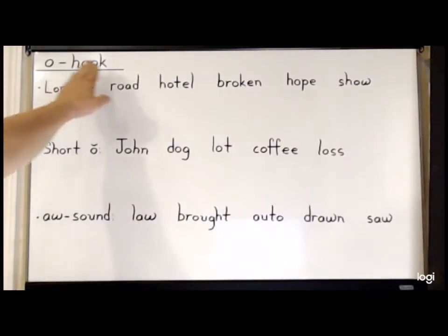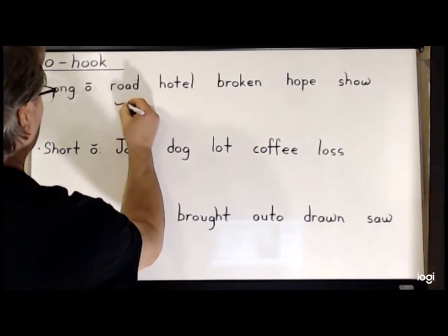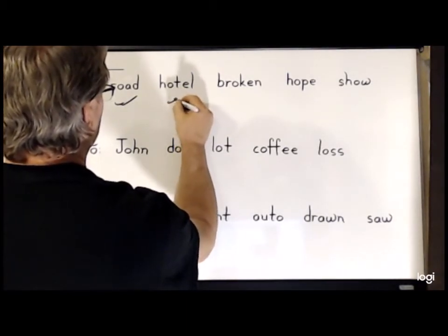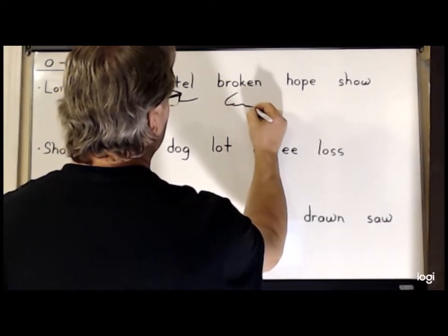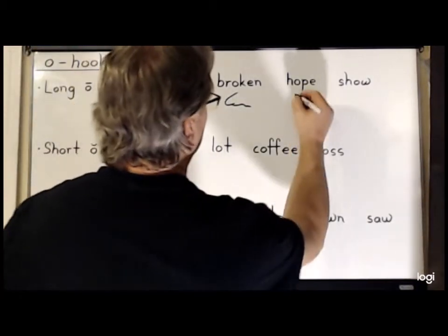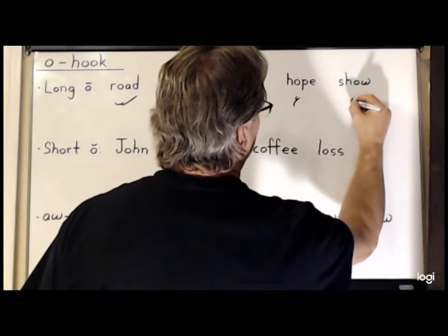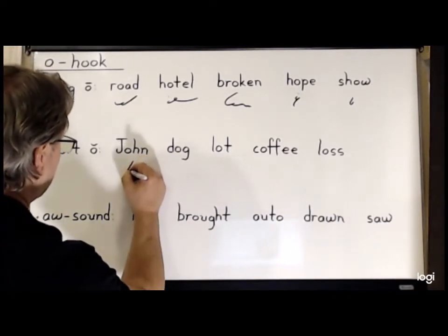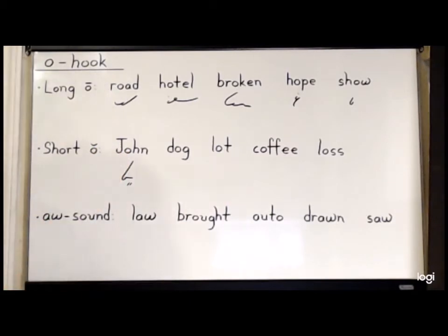Next is the O hook, and we will start with the long O sounds. So for 'road', R-O-D. For 'hotel', the dot for the H, then O-T-E-L. For 'broken', it is B-R-O-K-N. For 'hope', the dot for the H and the O-P. And for 'show', it is S-H then O.